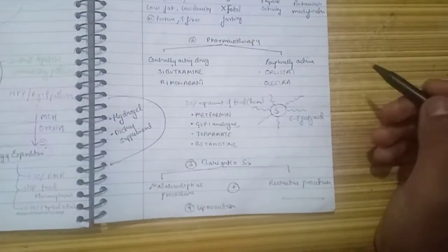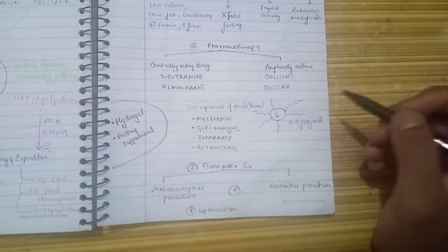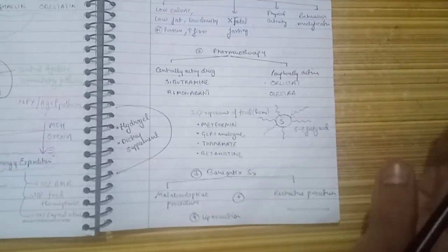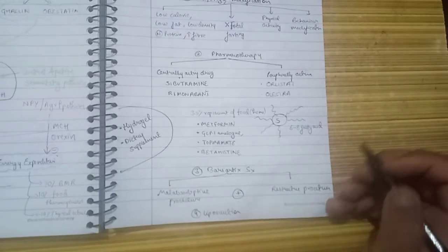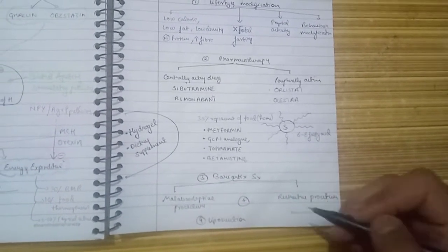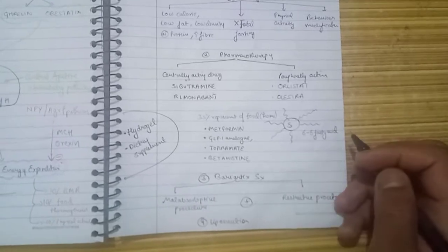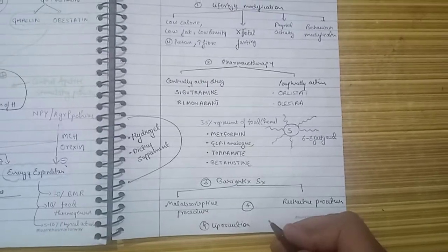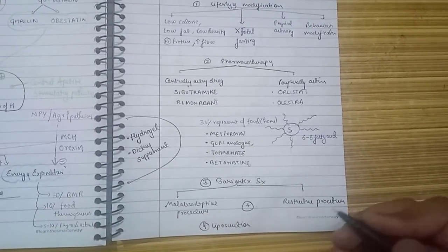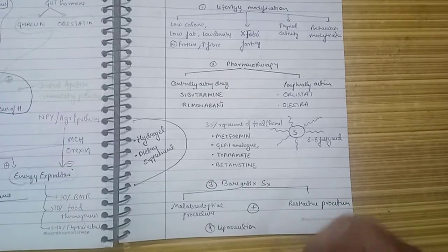The fourth option is liposuction. The detrimental effect of liposuction is that though it reduces the fat cells within our body, it does not treat the underlying cause, so the fat increases again rapidly. Plus, it does not decrease cardiovascular morbidity and other diseases associated with obesity.